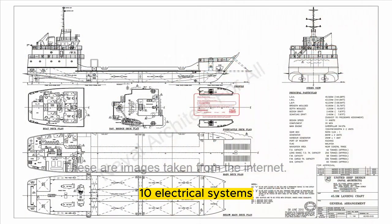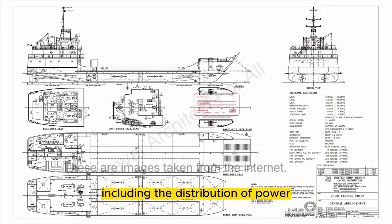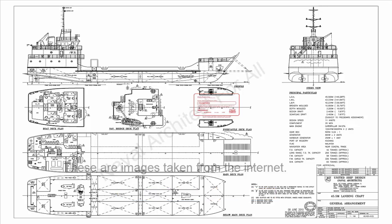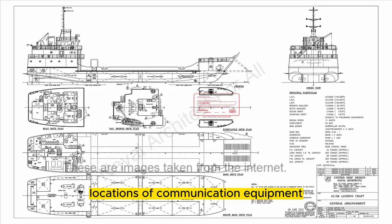10. Electrical Systems: The layout of electrical systems, including the distribution of power, lighting, and electrical panels. 11. Communication Systems: Locations of communication equipment, such as antennas and satellite dishes.